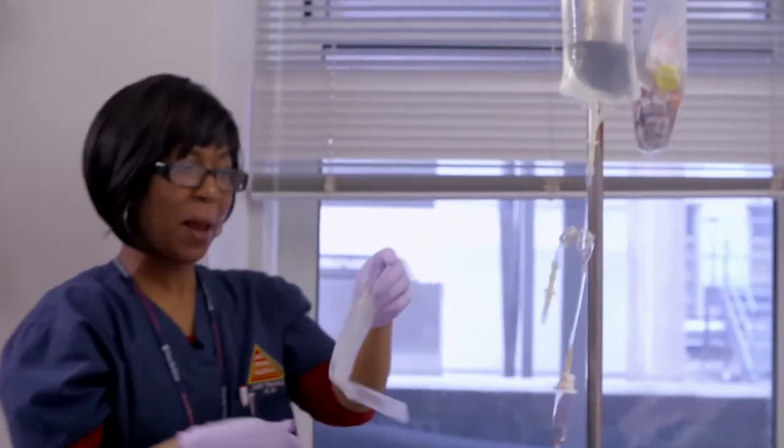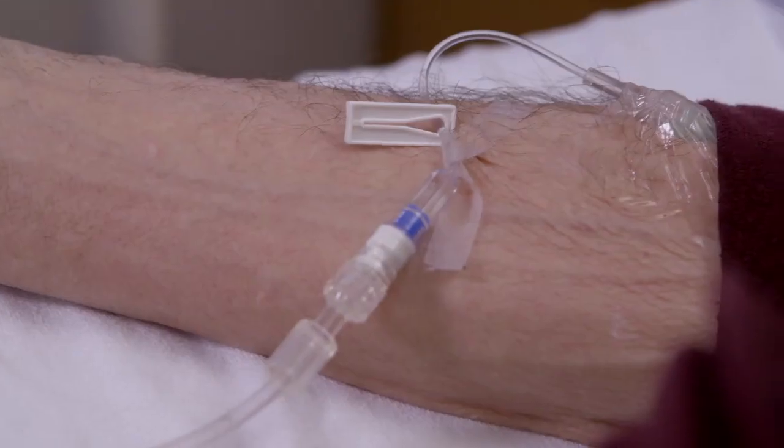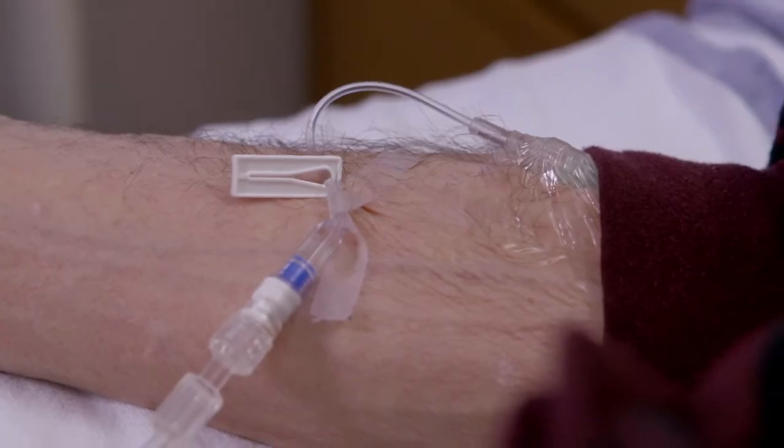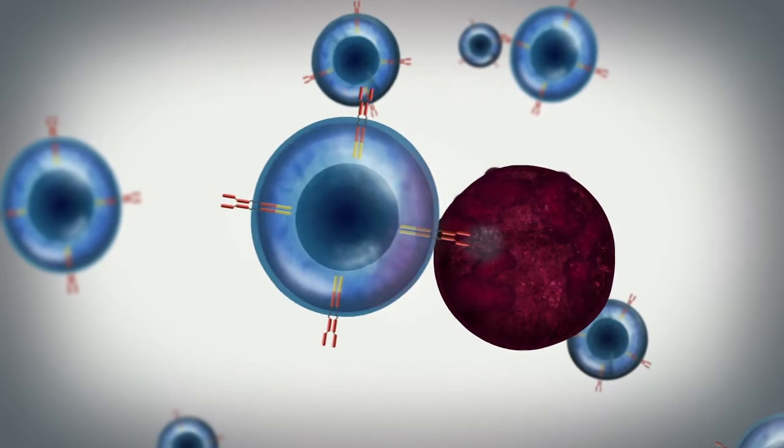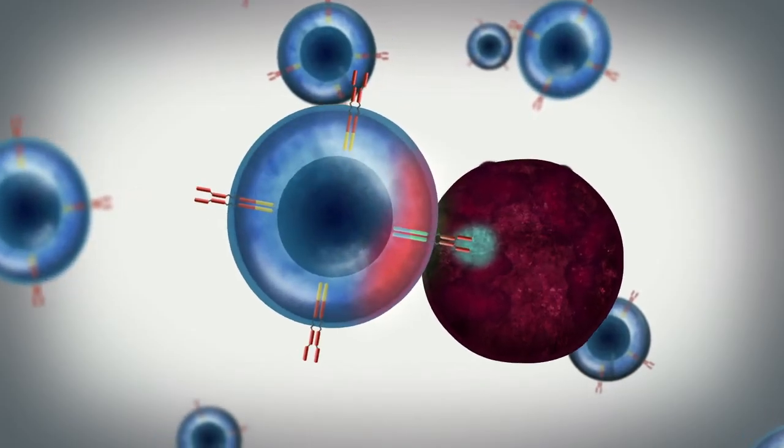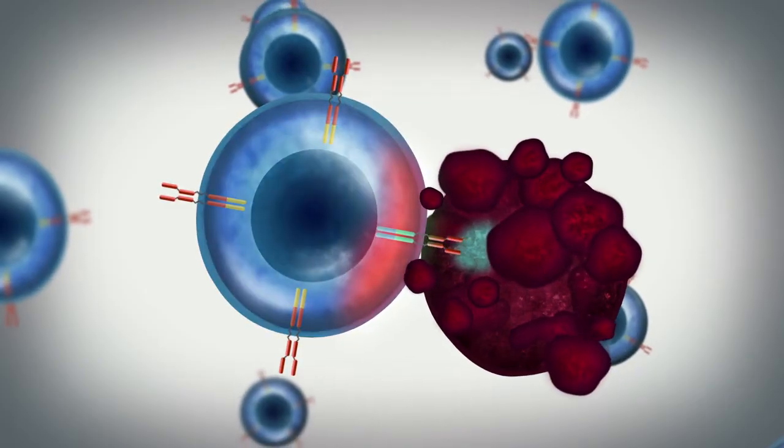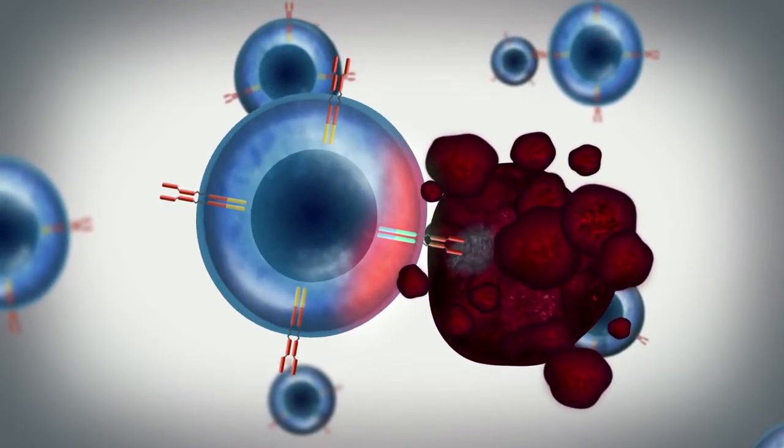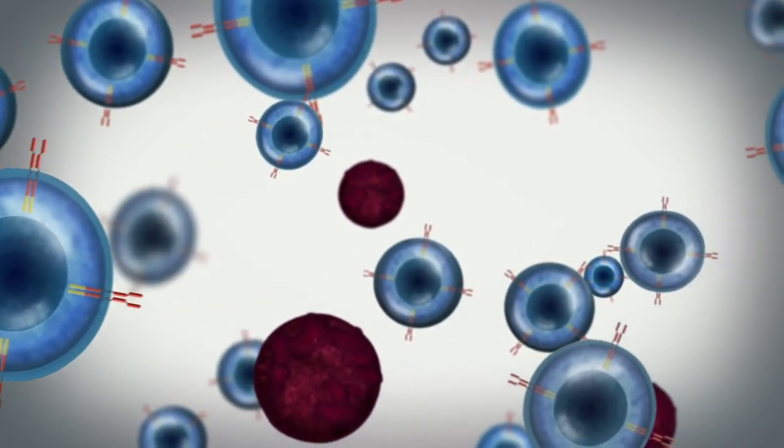The infusion of the genetically modified T cells is given intravenously, over just a few minutes. Research has shown that once infused into patients, the T cells can begin to search out and bind to surface proteins on tumor cells. Binding of the CAR to the target protein activates the modified T cell to kill the cancer cell, and also promotes rapid multiplication of the modified cells.